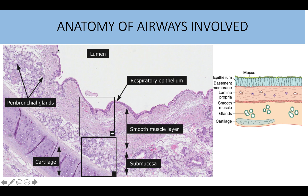On the histological side, you can see the normal respiratory epithelium. The normal respiratory epithelium of the airways is ciliated pseudostratified columnar epithelium. If you were to zoom in on a histological slide, you would find goblet cells — mucin-producing cells that produce mucus. Beneath this we have the lamina propria and then the smooth muscle layer. Within the lamina propria you can see the peribronchial glands, which also secrete mucus and contribute to various inflammatory processes. Then we have the smooth muscle layer and the submucosal glands.